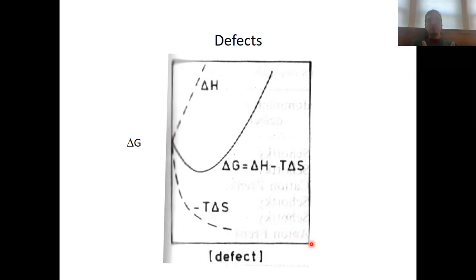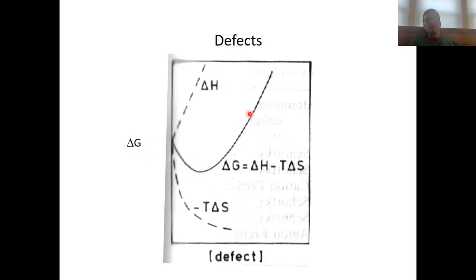However, defects are also associated with disorder and entropy. From the entropic standpoint, an increased number of defects decreases the minus T times delta S value, which also influences delta G. So enthalpy and entropy are antagonists working against each other, which results in a free energy minimum at a particular defect concentration.